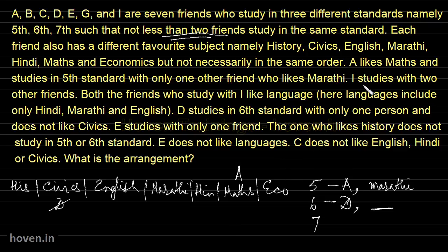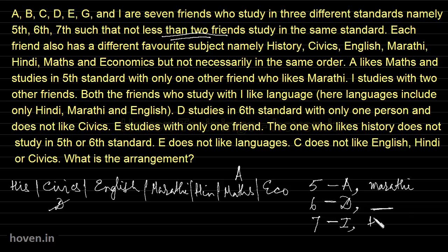We can come back to I immediately. E studies with two other friends. Both the friends who study with I like a language. So I cannot be in fifth standard, because if I is there those two friends would also have to be there. The only place left is seventh standard, where I is joined by Hindi or English persons — not Marathi, because Marathi is already adjusted in fifth standard.